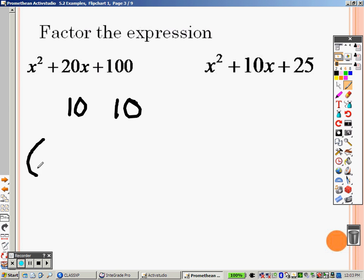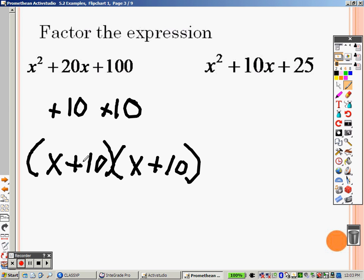So when you set this up, you take the first one, which is a positive 10, and the second one, which is a positive 10, you write x plus 10 and x plus 10. The positive 10 went in here, the positive 10 went in there. And there is x plus 10 and x plus 10.